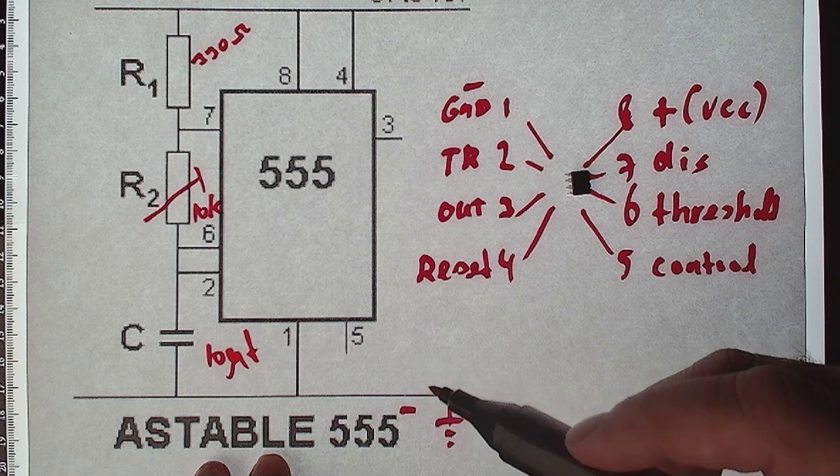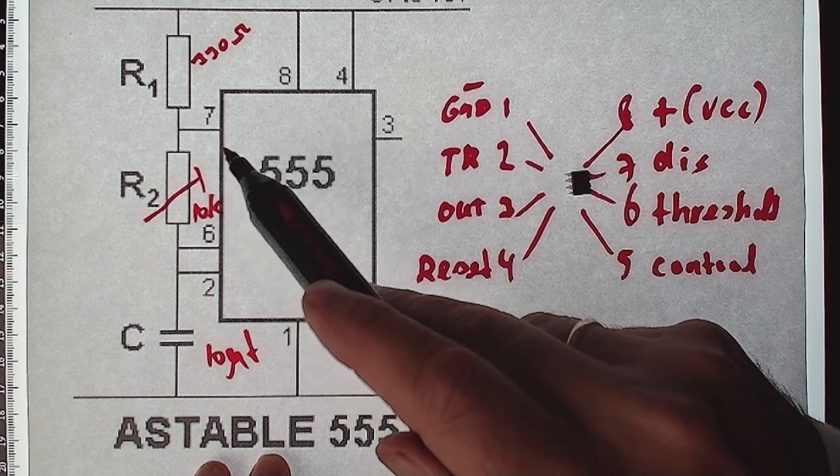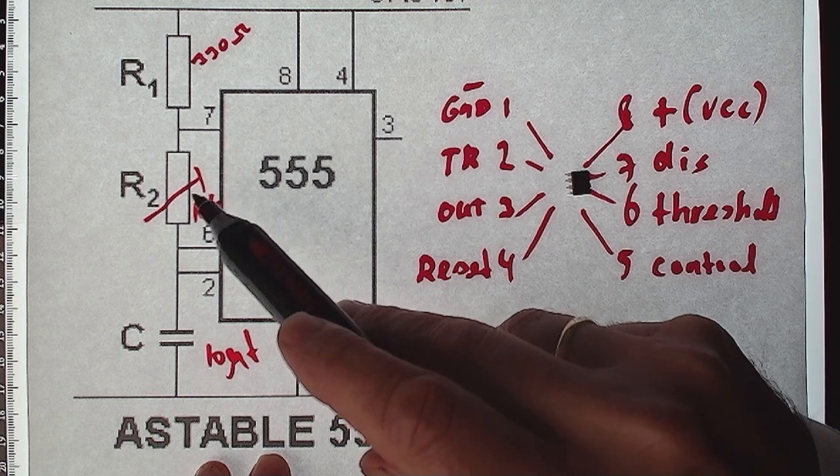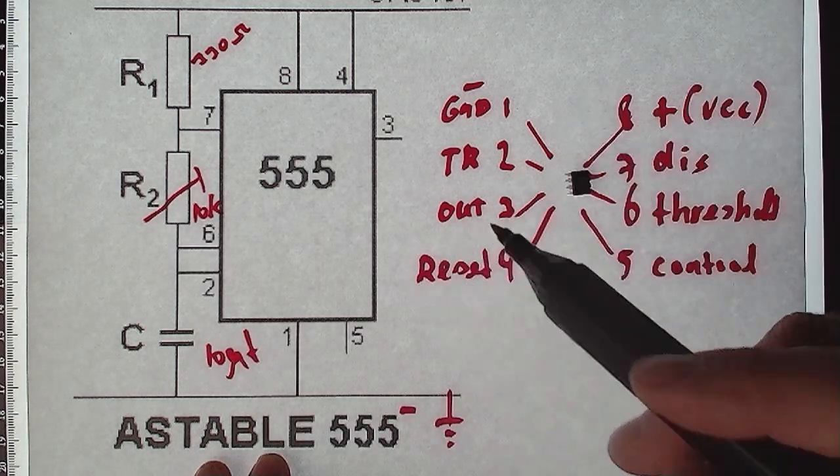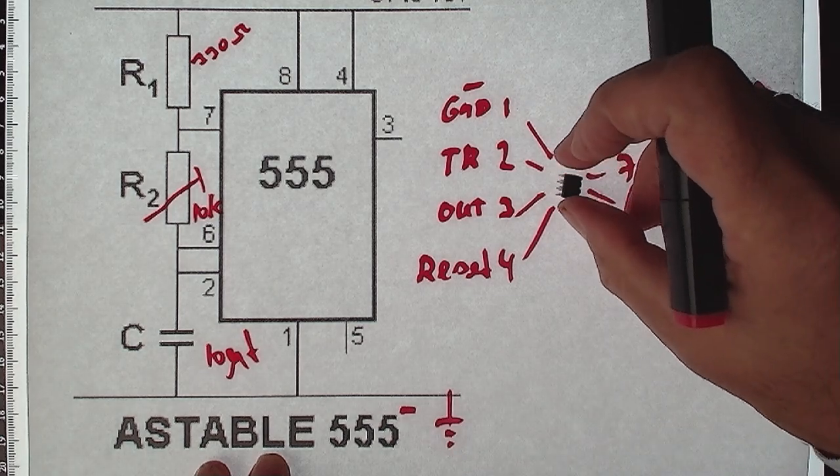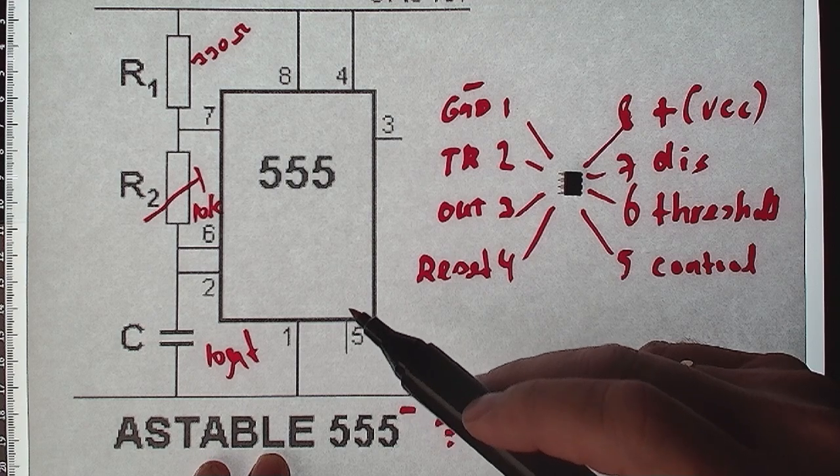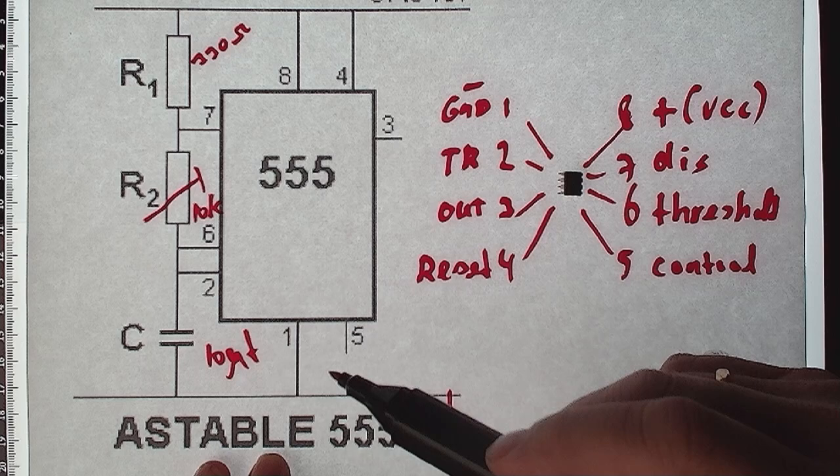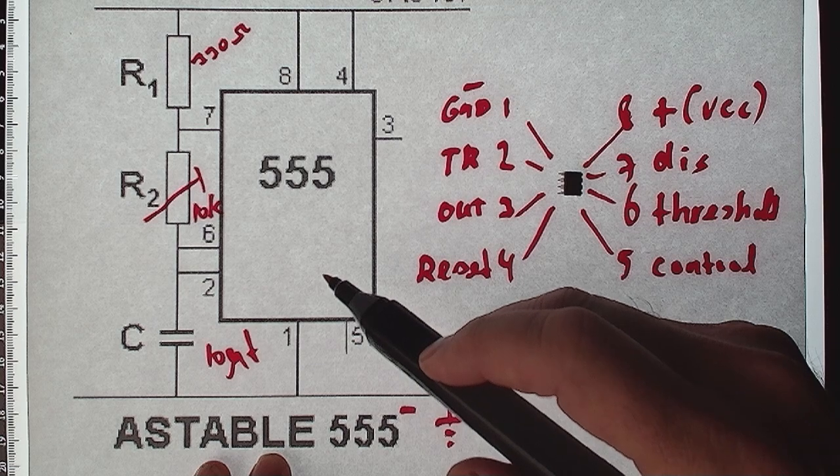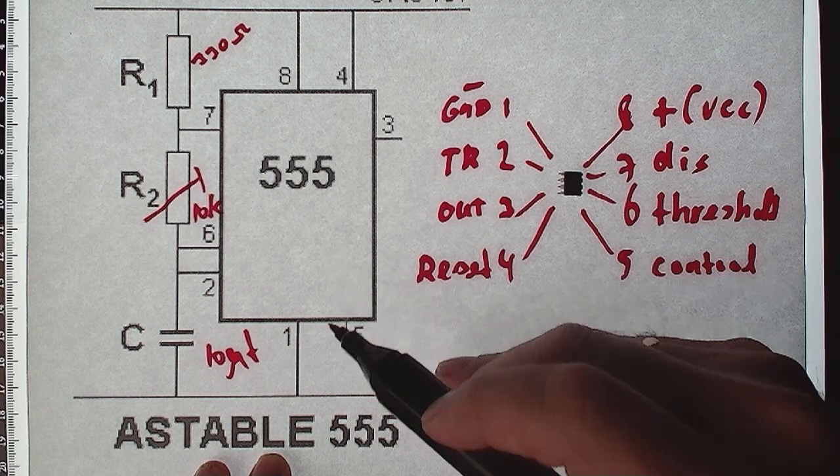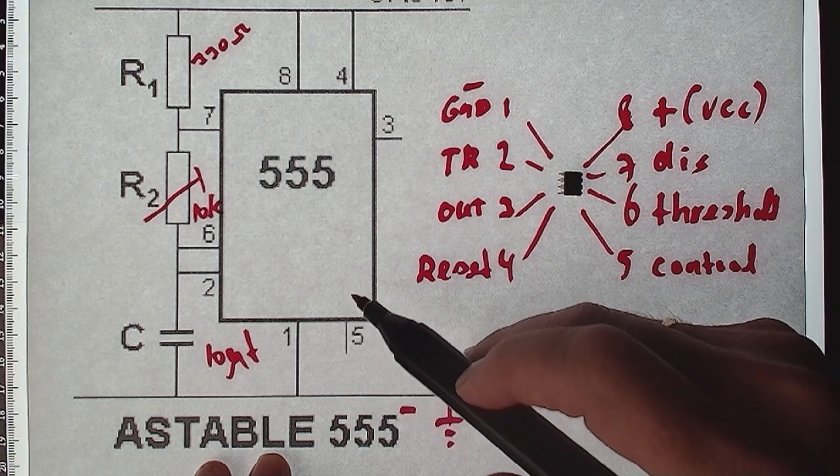And that's it basically. Now we can change the frequency by changing our 10k resistor but there are a lot of variants on these values. And I have a table that shows the frequencies at different values for the resistor and the capacitor. It may come in handy if you need to determine the frequency you want. So yeah that's it, simple.